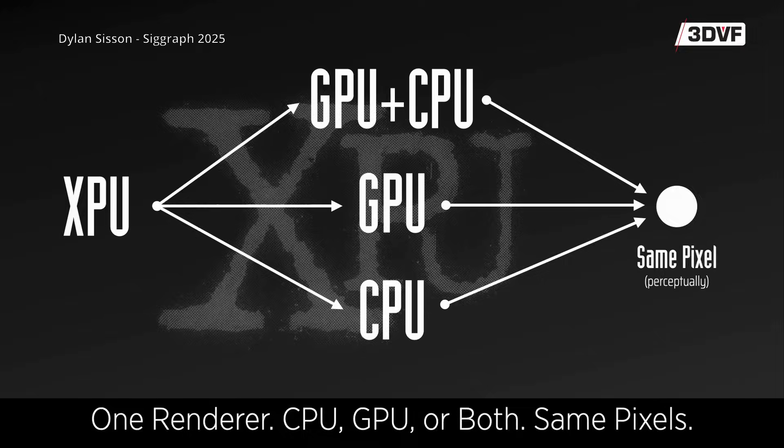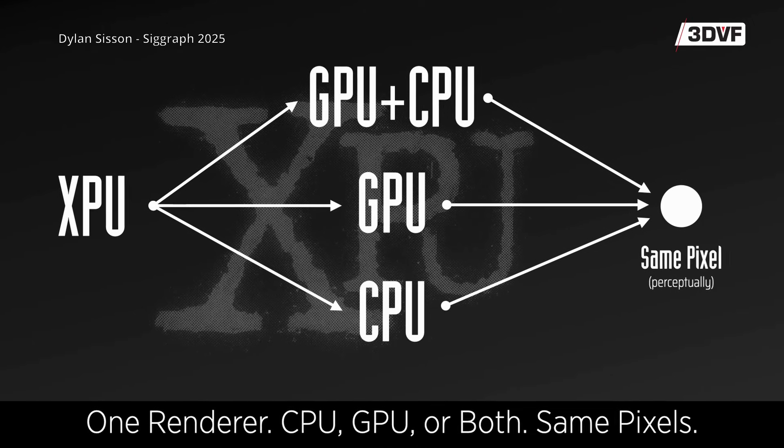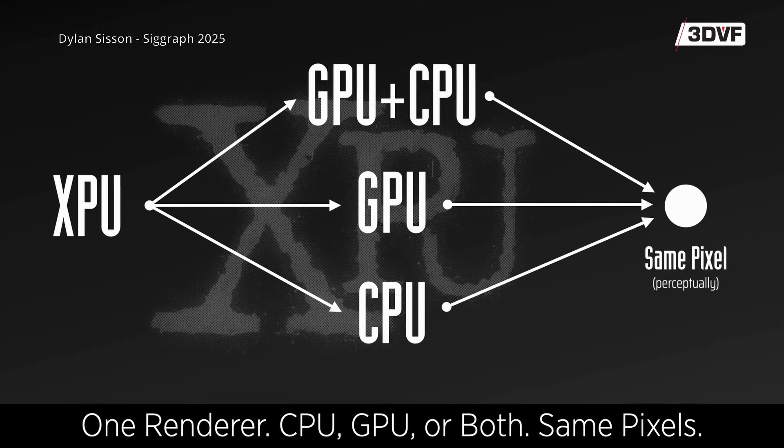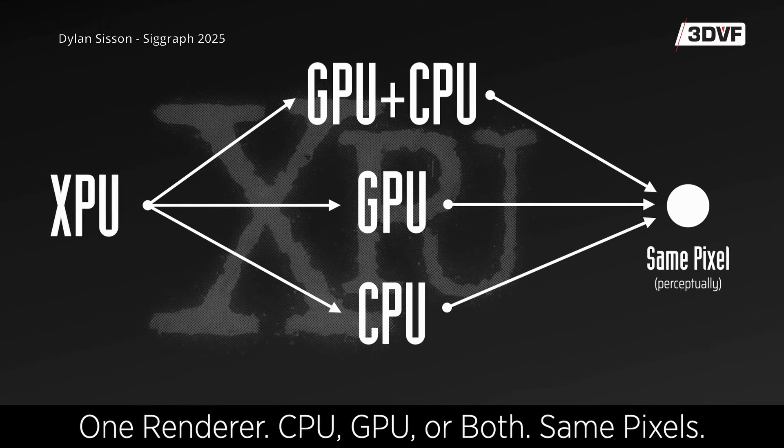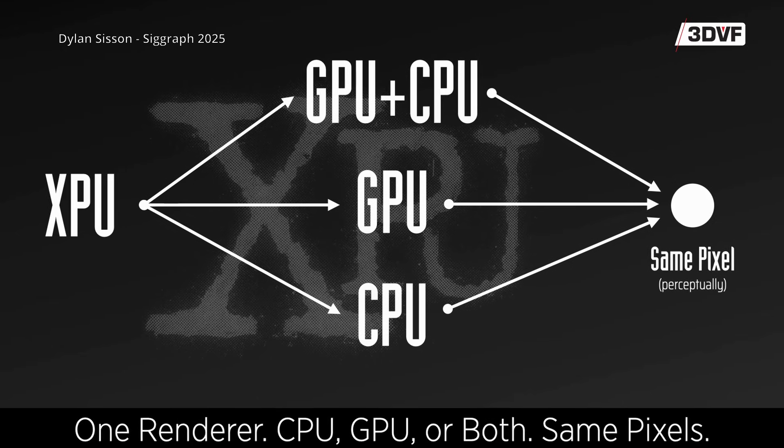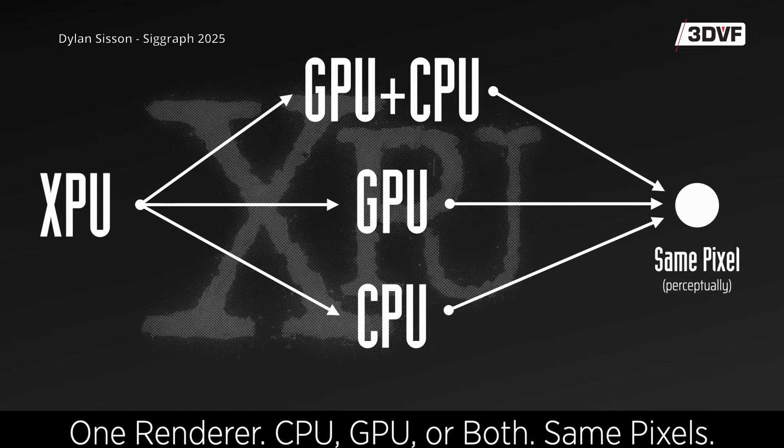Now we have hardware both on the GPU and CPU that don't have memory limitations and have a lot of power, so we've engineered a new architecture called XPU to take advantage of the GPU. RenderMan XPU is able to render on the CPU, the GPU, or both, and it's unique because it produces the same pixels regardless of whether it's using the CPU or GPU.